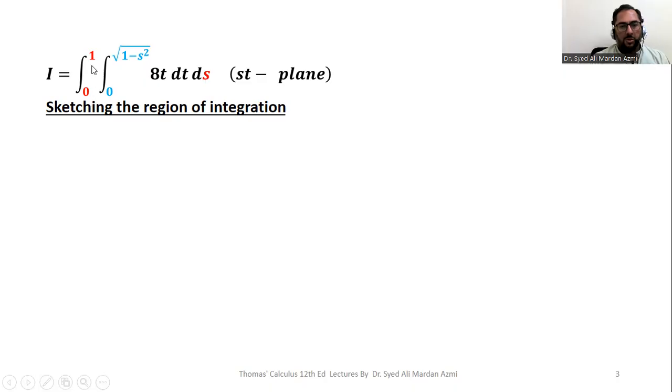Limits of s are 0 to 1. So we will have the boundaries s equal to 0, s equal to 1. Limits of t are 0 to square root of 1 minus s square. So we will get two more boundaries t equal to 0, t equal to square root of 1 minus s square.